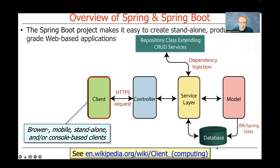Let me walk through the different architectural elements that make up the Spring Boot infrastructure. You have clients — those can be browsers, mobile clients, standalone clients, or console-based clients. For the purposes of this class, we're going to use some mobile apps developed in Android as clients, and also some console-based clients using tools like Curl and Postman to generate requests that go from the client over to the server or services.